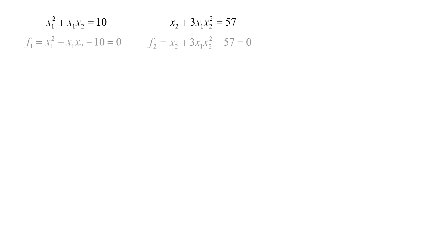We bring all terms to the left side of the equations, making the right sides of the equations equal to 0. The first equation is labeled f1, and is equal to x1 squared plus x1 x2 minus 10. The second equation is labeled f2, and is equal to x2 plus 3 x1 x2 squared minus 57.